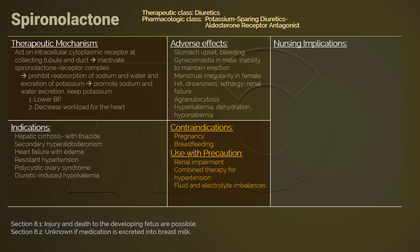Spironolactone is commonly used in combination with other medications. It is commonly used with thiazide for hepatic cirrhosis, and with ACE inhibitor and loop diuretic for heart failure. When using spironolactone with other medications that can affect blood pressure, precaution regarding hypotension should be taken.